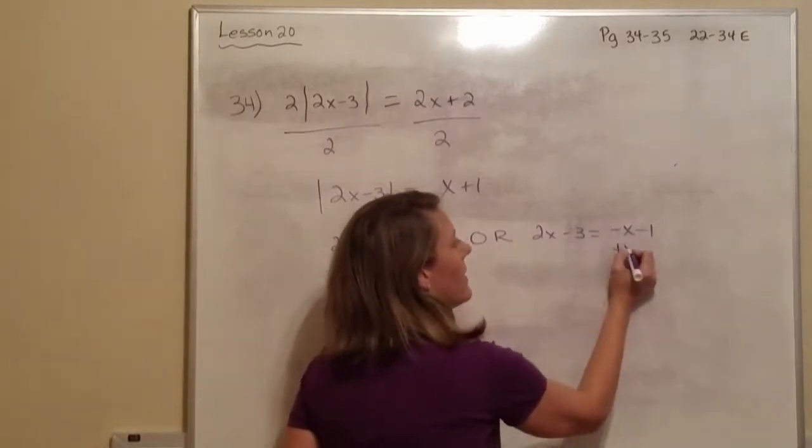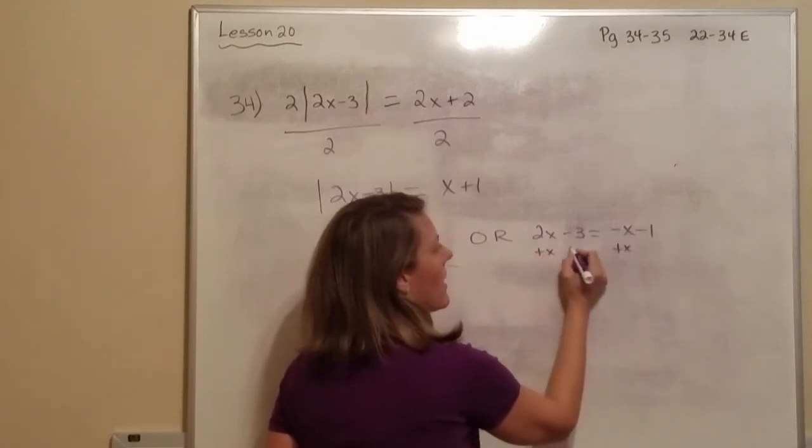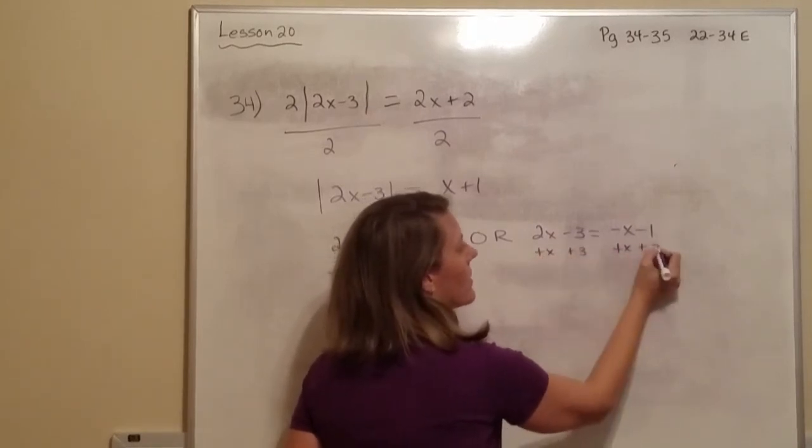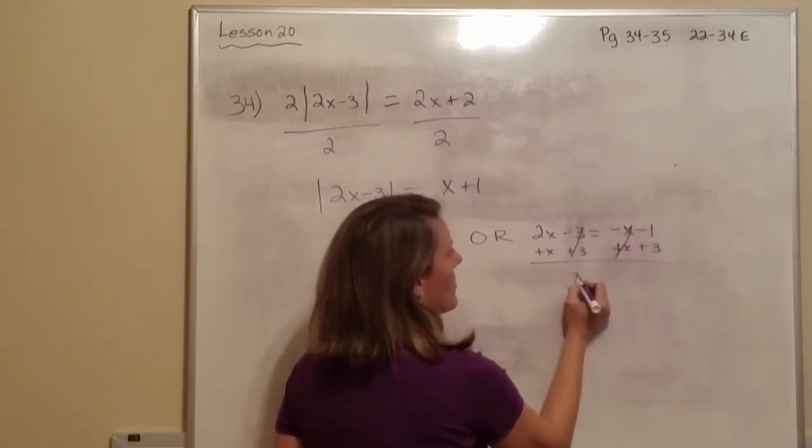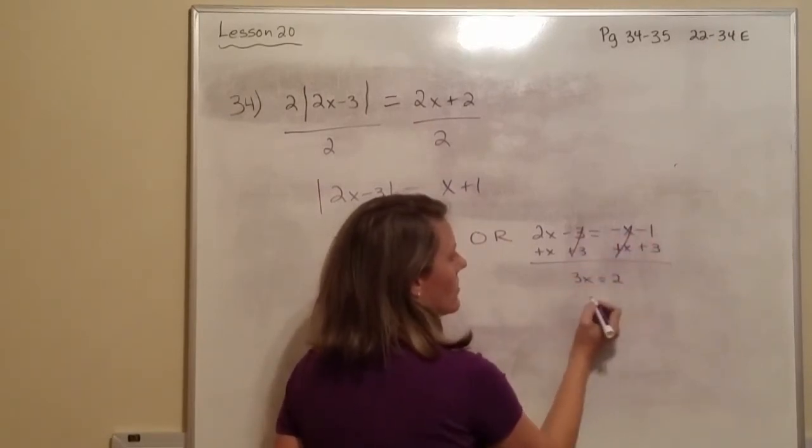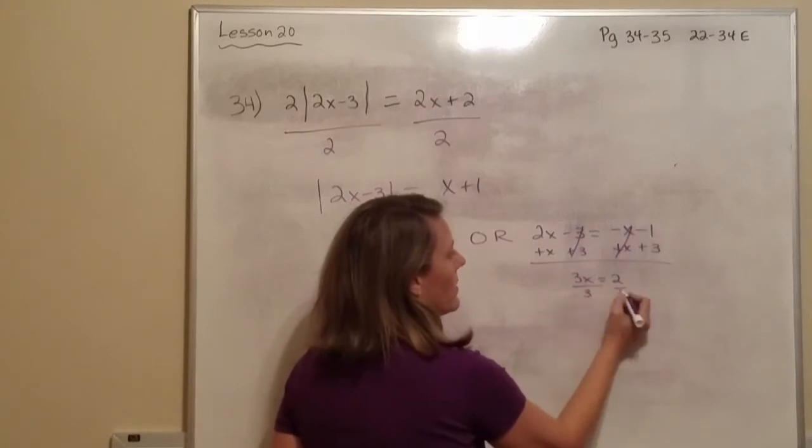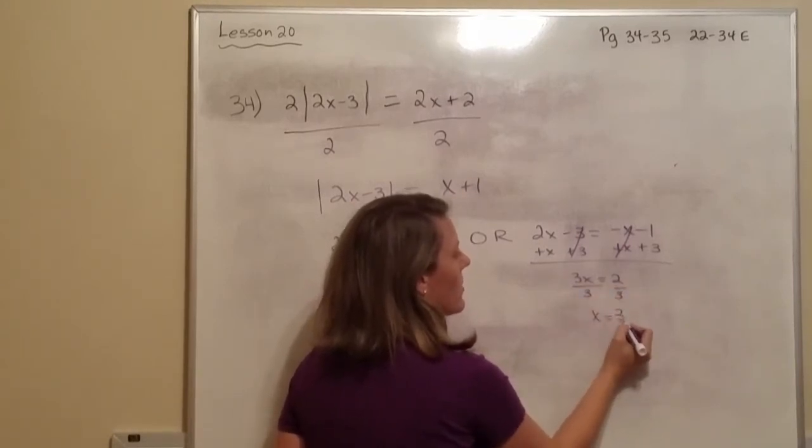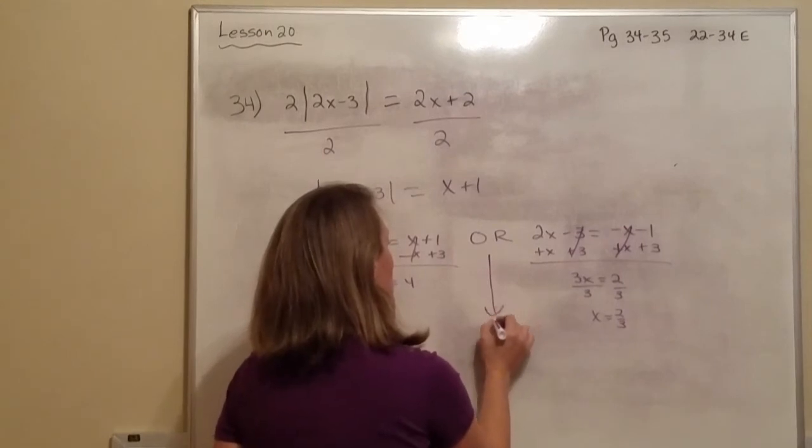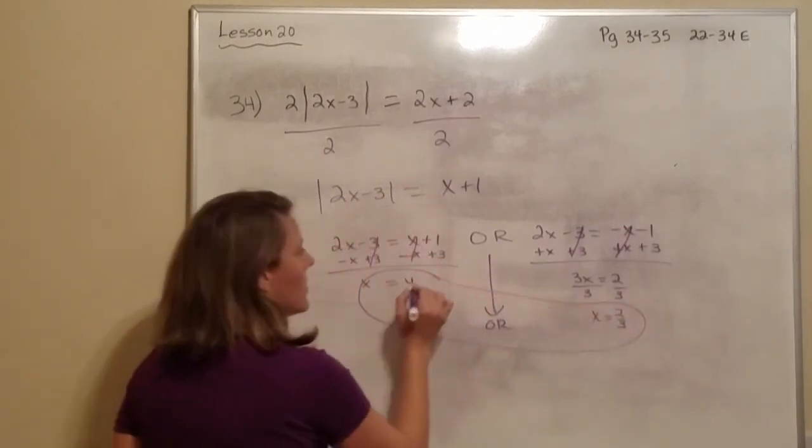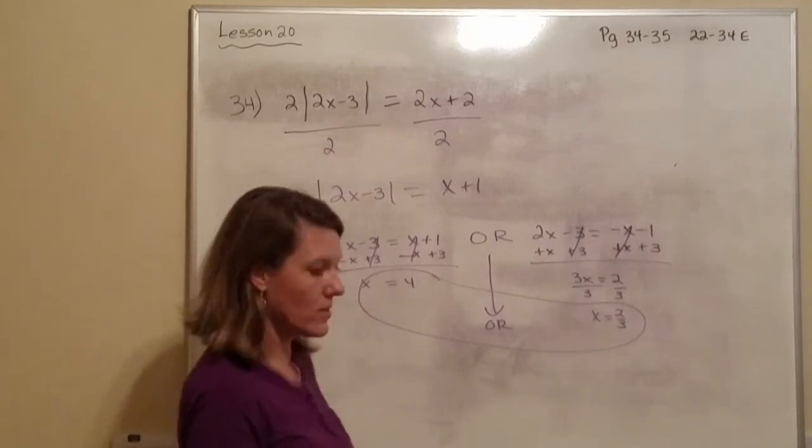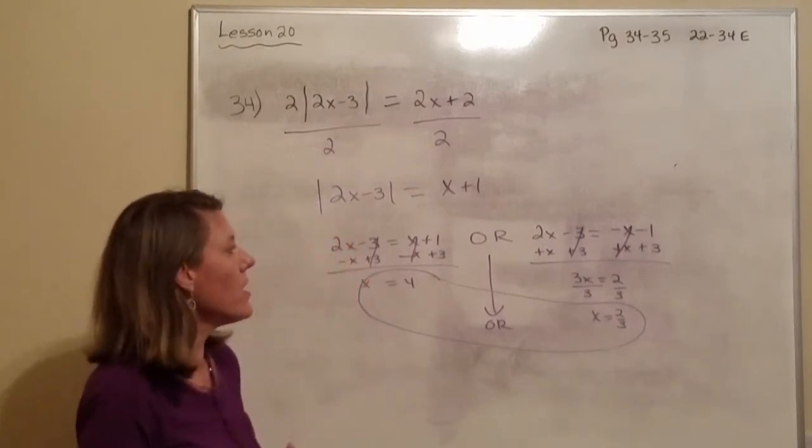This one, we're going to add x and add 3. So these cancel out. So 3x equals 2. Divide by 3. x equals 2 thirds. So there's your answer for 34. Alright.